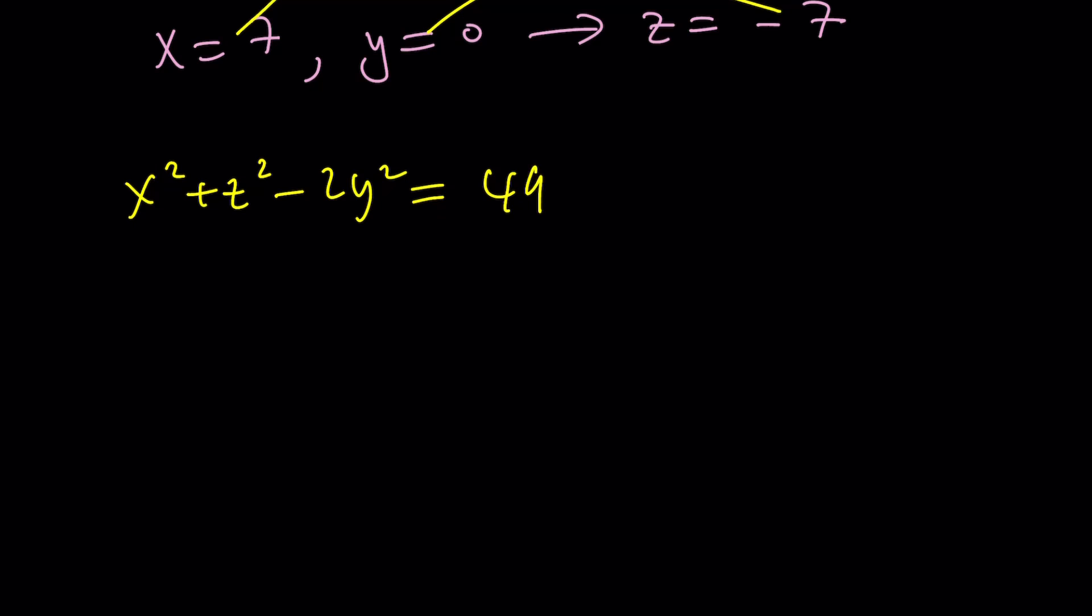x squared plus z squared minus 2y squared is equal to 49, and if you square negative 7, you still get a positive answer, so be careful about that. Plus 49 minus 2 times 0, that's just 0. What is 49 plus 49? That will be 98. Again, we got the exact same answer.